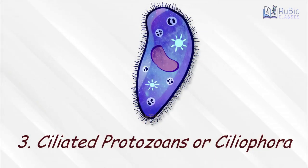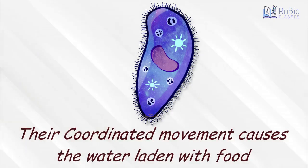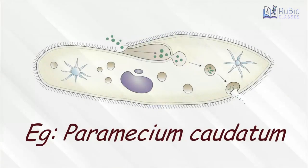Ciliated protozoans, or Ciliophora, possess thousands of cilia, and their coordinated movement causes water laden with food to be steered into the gullet. Paramecium is one example.